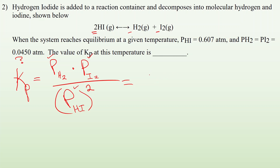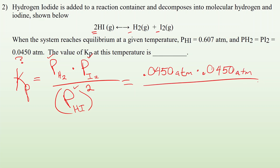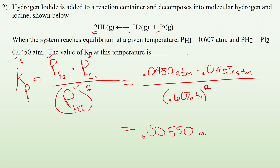Plugging in: the pressure of H2 is 0.0450 atm times 0.0450 atm for I2, divided by the pressure of HI, 0.607 atm, squared. Running the calculation gives 0.00550 — no units, because it's an equilibrium constant.